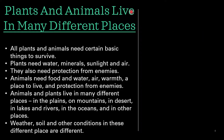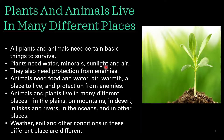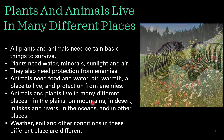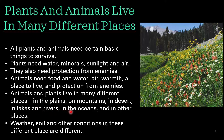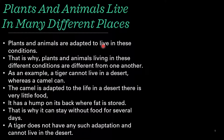Let's start with the topic: plants and animals live in many different places. All plants and animals need certain basic things to survive. Plants need water, minerals, sunlight and air. They also need protection from animals. Whereas animals need food and water, air, warmth, a place to live, and protection from enemies. Animals and plants live in many different places — in the plains, on the mountains and deserts, in lakes and rivers, in oceans. Weather, soil and other conditions in these different places are different, so plants and animals are adapted to live in these different conditions.